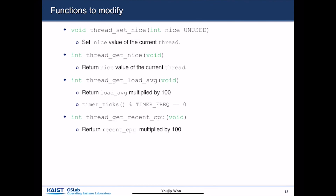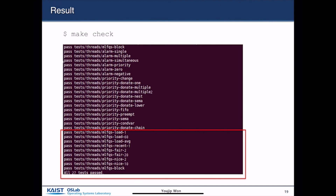These are the functions you need to modify to implement the BSD-like scheduler. There is thread_set_nice, which sets the nice value of the current thread, and thread_get_nice, which returns the nice value of the current thread. You also implement thread_get_load_avg, which returns load_average multiplied by 100, and thread_get_recent_cpu, which returns recent_cpu multiplied by 100. Once you have completely implemented these features, you should be able to pass all 27 to 30 tests.